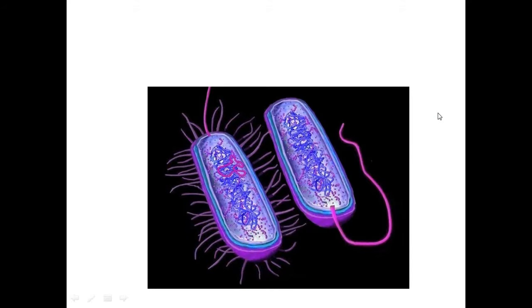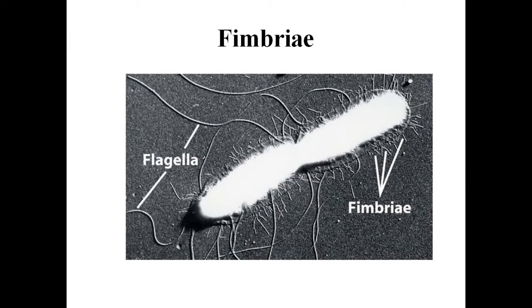Besides the flagella, pili and fimbriae are also surface structures of bacteria but do not play a role in motility. Pili are elongated tubular structures made of special protein and are mainly used in attachment. Fimbriae are small crystal-like fibers sprouting out of the cells. In some bacteria, they help attach the bacteria to rocks and streams and also to host tissue.